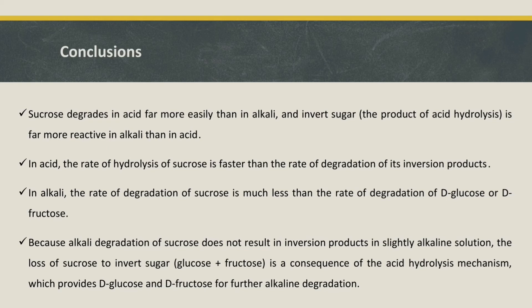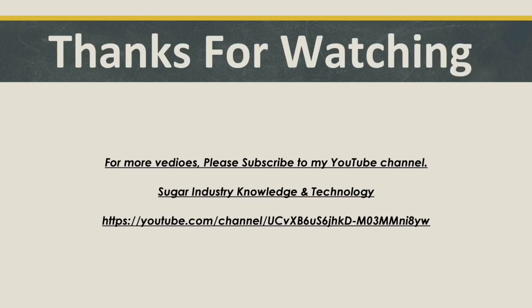Conclusions: Sucrose degrades in acid far more easily than in alkali, and invert sugar — the product of acid hydrolysis — is far more reactive in alkali than in acid. In acid, the rate of hydrolysis of sucrose is faster than the rate of degradation of its inversion products. In alkali, the rate of degradation of sucrose is much less than the rate of degradation of D-glucose or D-fructose, because alkaline degradation of sucrose does not result in inversion products. In slightly alkaline solution, the loss of sucrose to invert sugar (glucose plus fructose) is a consequence of the acid hydrolysis mechanism, which provides D-glucose and D-fructose for further alkaline degradation. Thanks for watching — for more videos regarding the sugar industry, please keep visiting my channel.